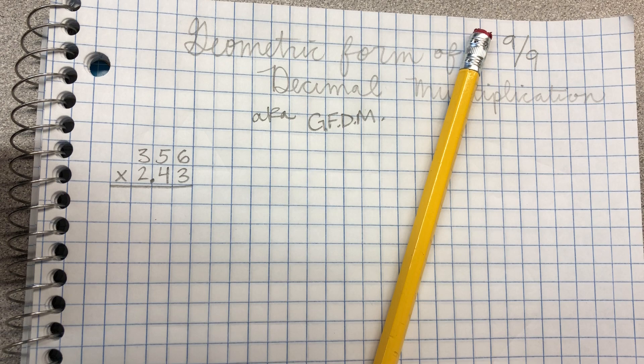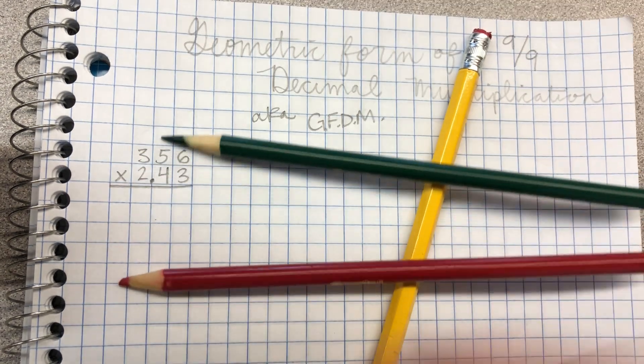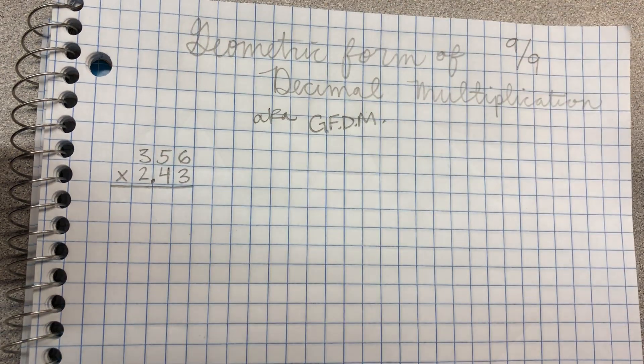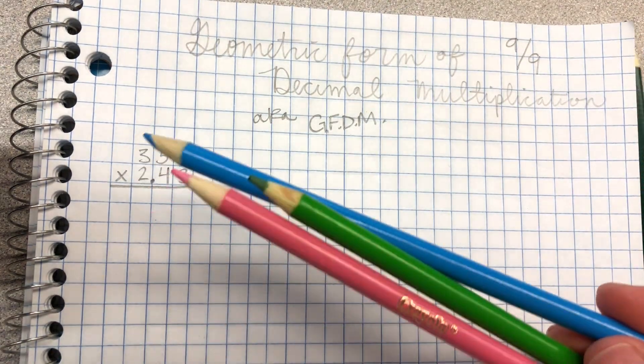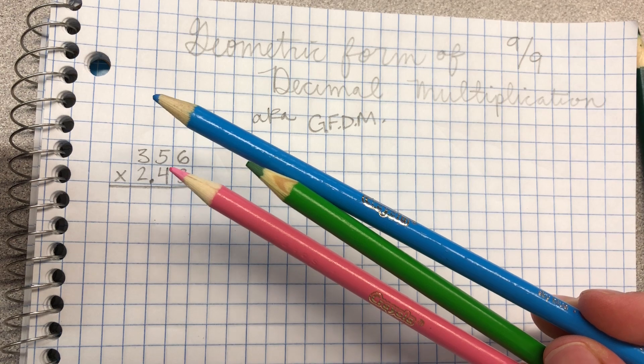You'll also need some colored pencils. With GFDM you will need more than just green, red, and blue. We will also need pink, light blue, and light green.